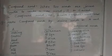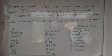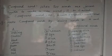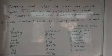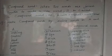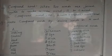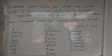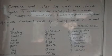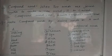तीसरा word है blood. तो इसका suitable word जो column B में है, वो है pressure. Compound word बना: blood pressure. Next — cotton. Cotton का column B में suitable word है roll. तो हमारा compound word बना: cotton roll.